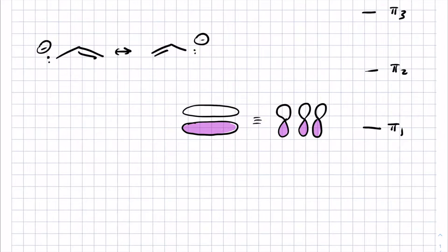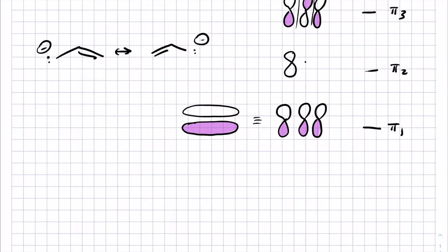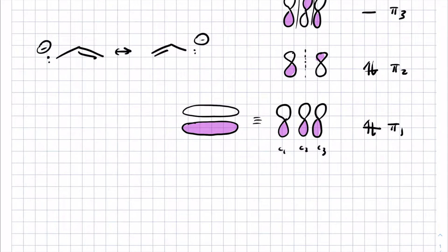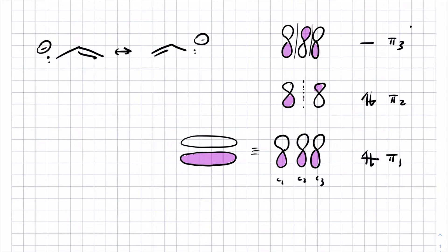I don't draw it out extended like this because this method helps you remember that there are three atoms there. The highest energy orbital was the one that had phase switches between each atom — nodes there — and then the middle one was this strange one that also has a node that coincides with where carbon 2 is. In this molecule, you have four electrons involved in resonance: the two in the pi bond and the two in the lone pair. We fill up the pi orbitals with the available electrons, and then choose HOMO and LUMO based on which is the highest occupied versus lowest unoccupied molecular orbital.